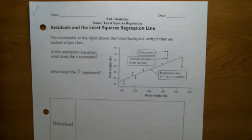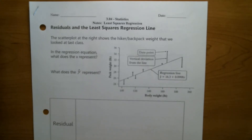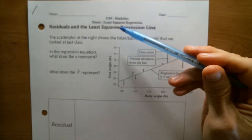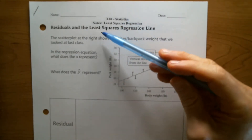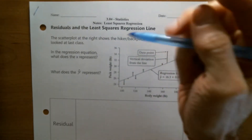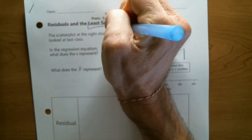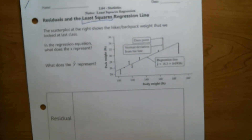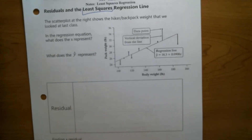Welcome to your stats notes video. Today we're going to see how the calculator actually comes up with its regression equation and where those numbers are coming from. We're going to start using the more proper name for it, which is the least squares regression line, and we'll talk about what 'least squares' is actually referring to. But before we can do that, we have to talk a little bit about residuals.